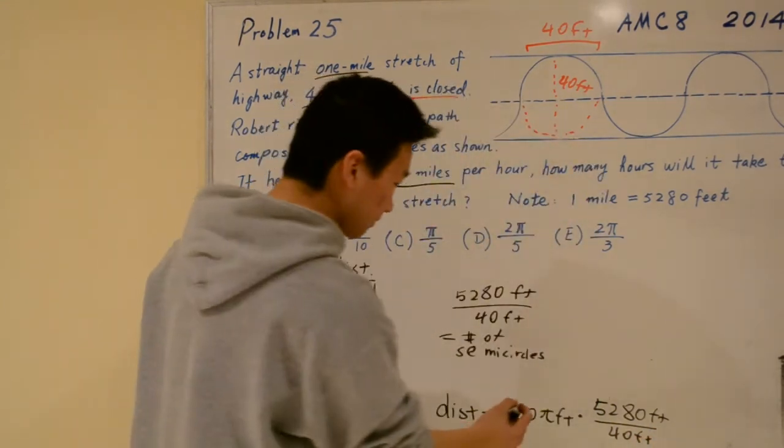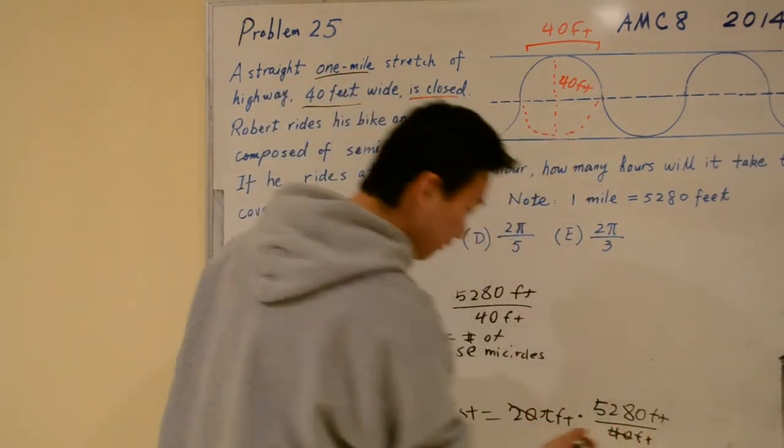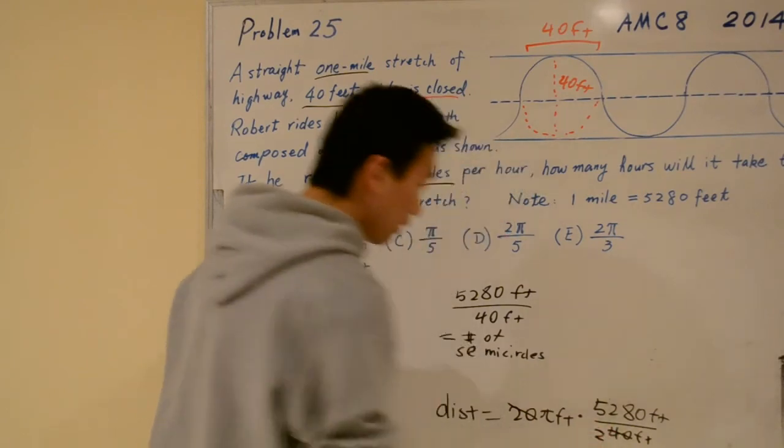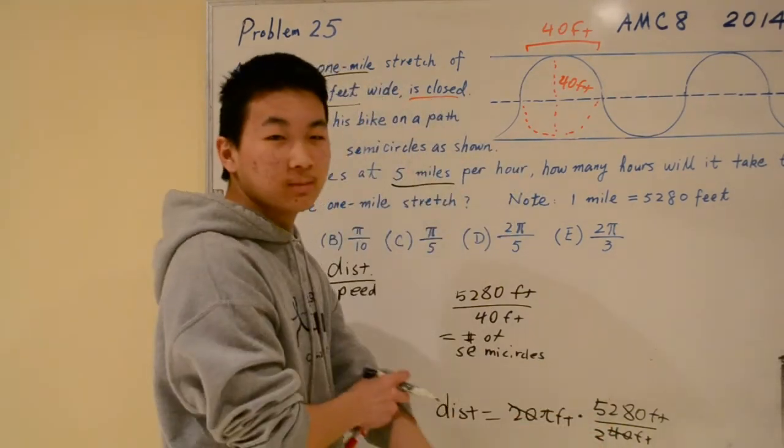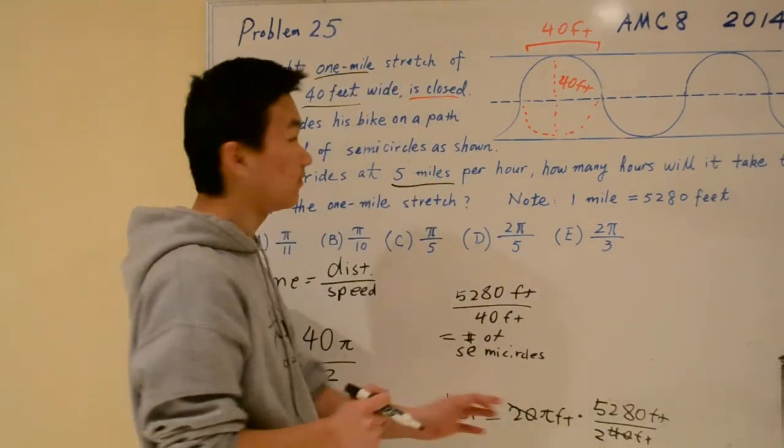We can simplify this by canceling the 20 and the 40 to get a 2 right here. We'll leave further simplification for later because it's more convenient this way.